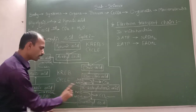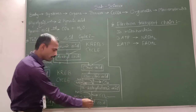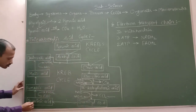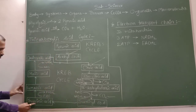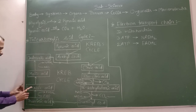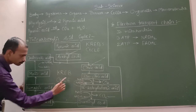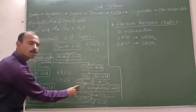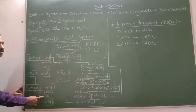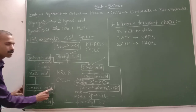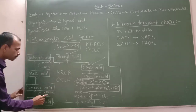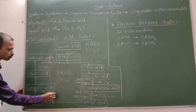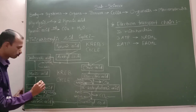When alpha-ketoglutaric acid is further converted into succinyl coenzyme A, again one carbon dioxide molecule is released and NAD is again converted into NADH₂. Succinyl coenzyme A is then used to form succinic acid, which is converted into fumaric acid. In this step, FAD (flavin adenine dinucleotide) is reduced to FADH₂.